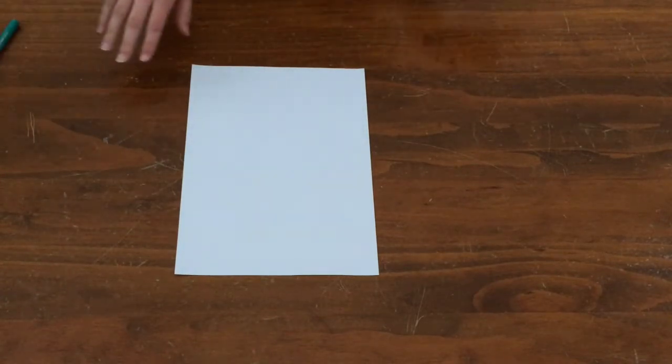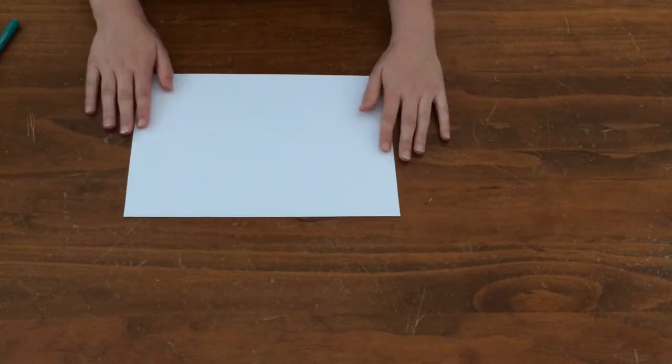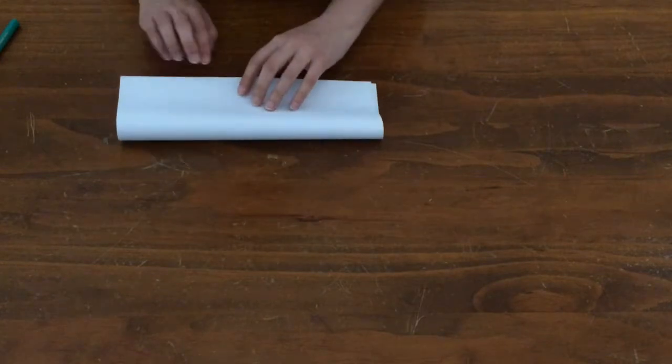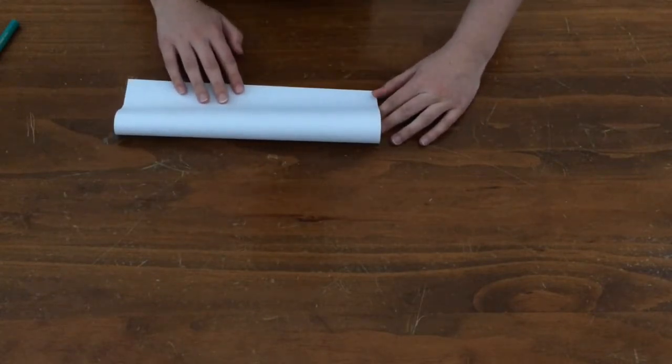So the first step of making this card is to turn your piece of paper landscape. Now you want to pull the top part of it all the way down to the bottom part and make an even fold.